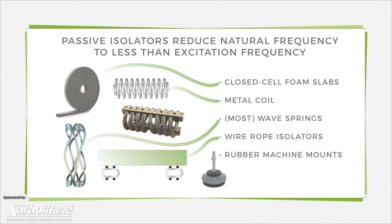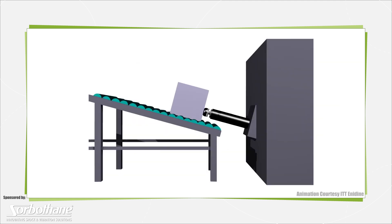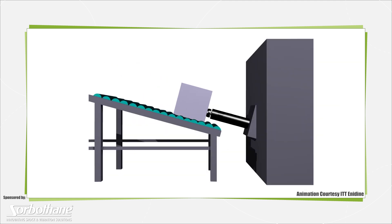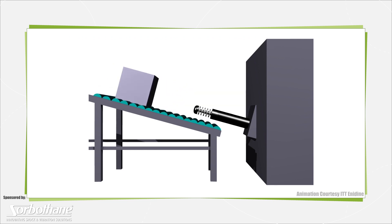In fact, many isolators do impart a small amount of damping. Some, including wire rope isolators, also attenuate shock impact at sudden move ends, hard stops, and collisions without recoil on conveyor e-brakes or axis stroke ends, for example.